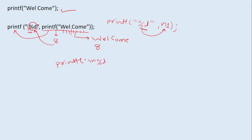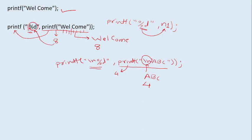For example: printf("%d", printf("\nabc")). This inner printf goes to the next line and prints 'abc', returning 4 — because backslash n is counted as one character, plus 'a', 'b', 'c' makes 4. So remember: backslash n and backslash t are each counted as a single character. The outer printf then prints 4. This is just to show that we can use a printf statement within another printf statement.